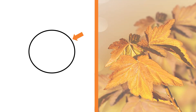The animal cell is enclosed by a membrane. This is called the cell membrane. It is made up of lipoprotein, which means it is made up of fats or lipids and protein.